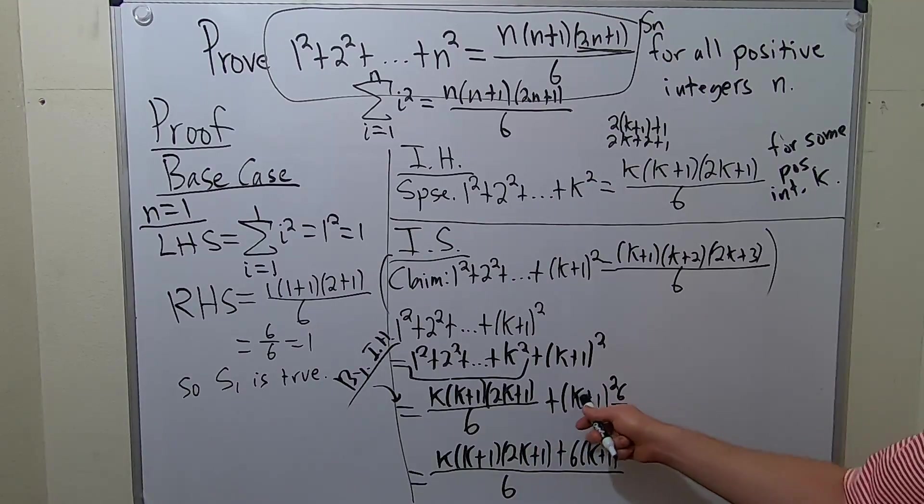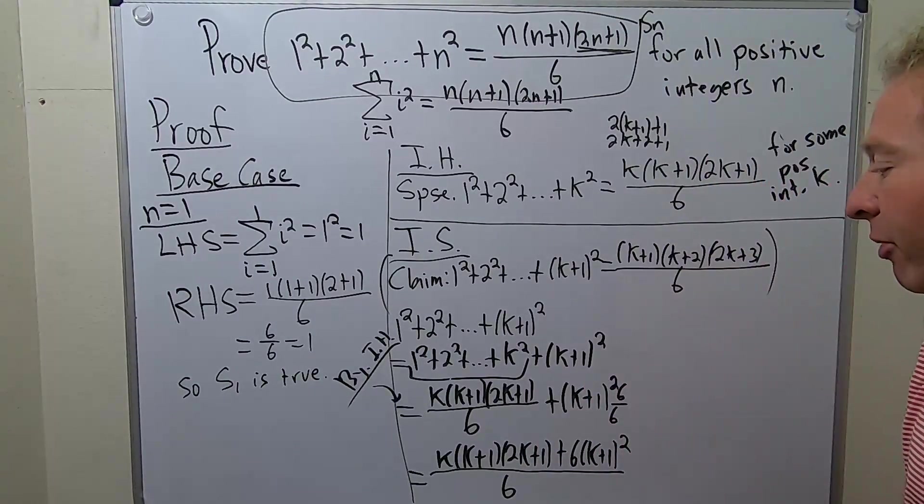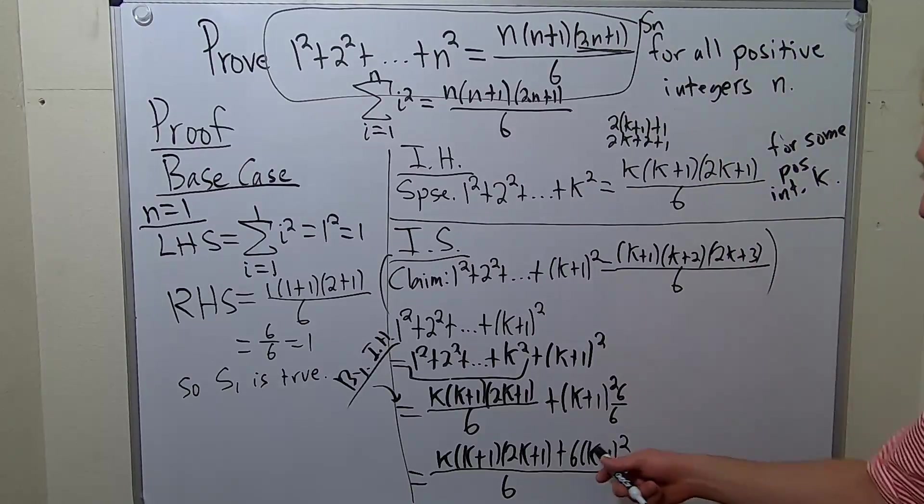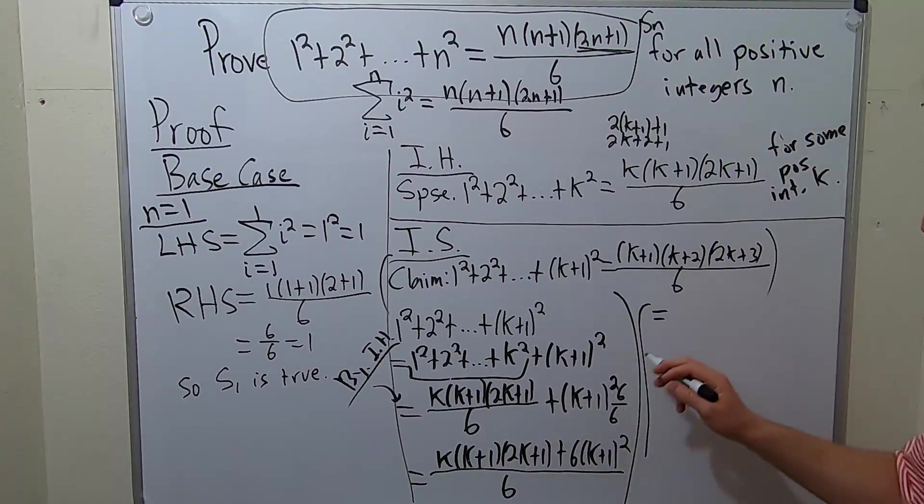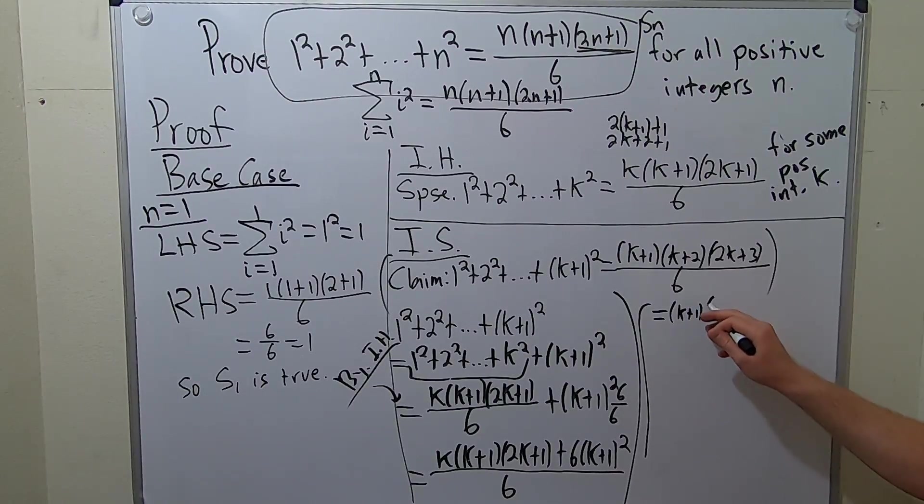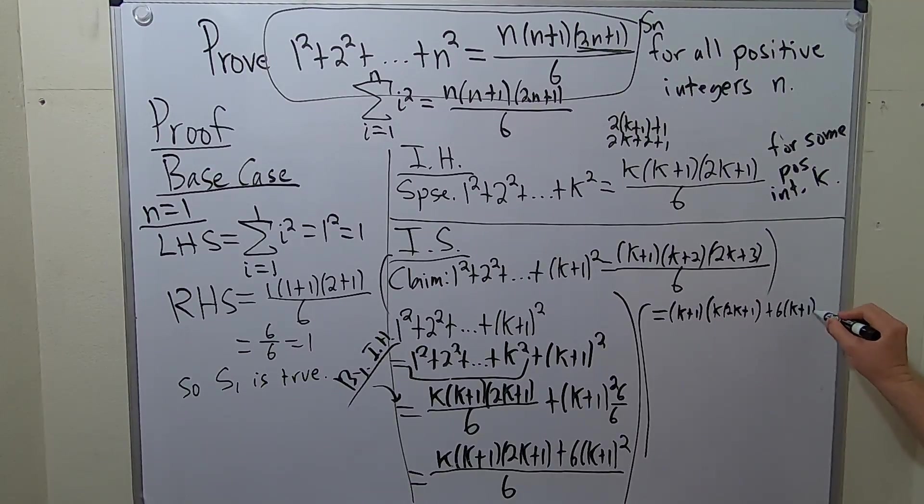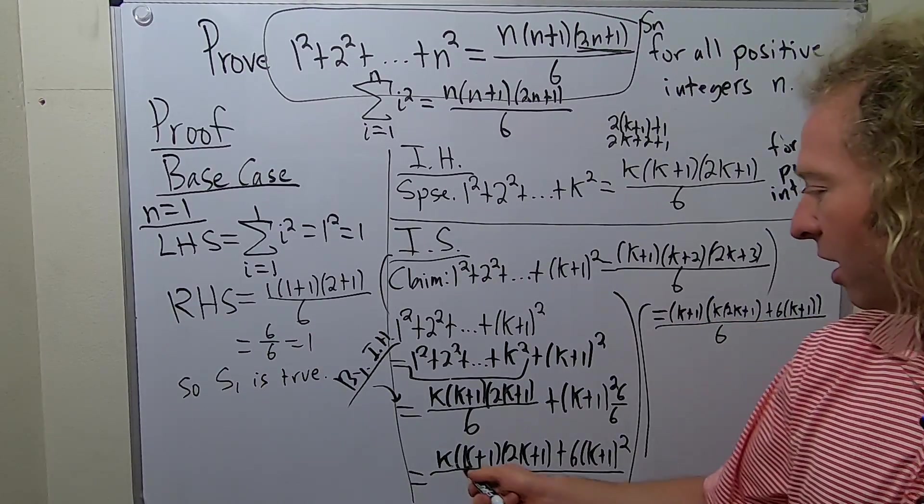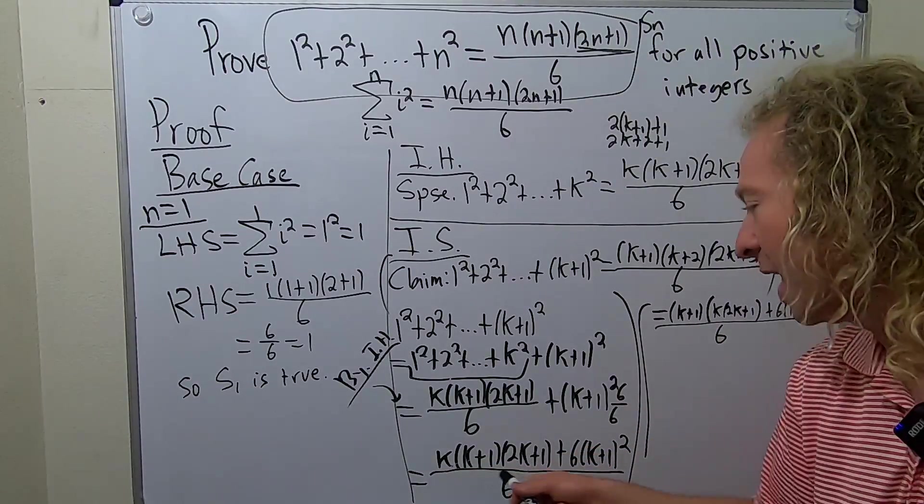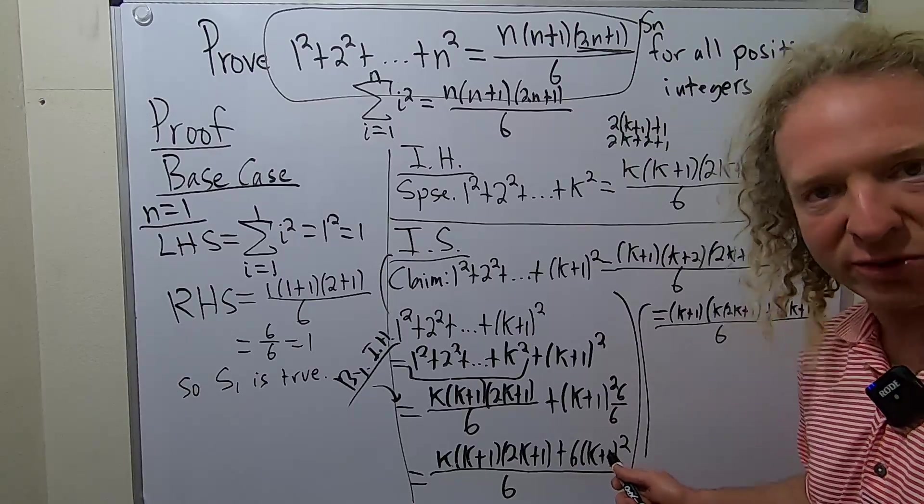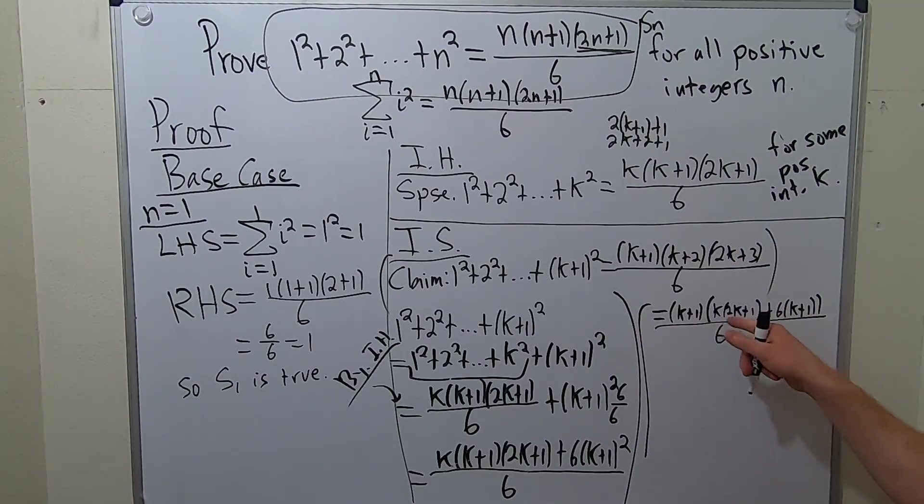Just copy, paste, and then multiply that by 6. So I'm thinking now, we can pull something out. We need to get here. So I'm thinking we can pull out a k+1. So we have k+1 times [k(2k+1) + 6(k+1)]/6. Let's check that. We pulled out a k+1, so we have k(k+1), k(2k+1), and 6(k+1). Yep, 6(k+1), so we're good.